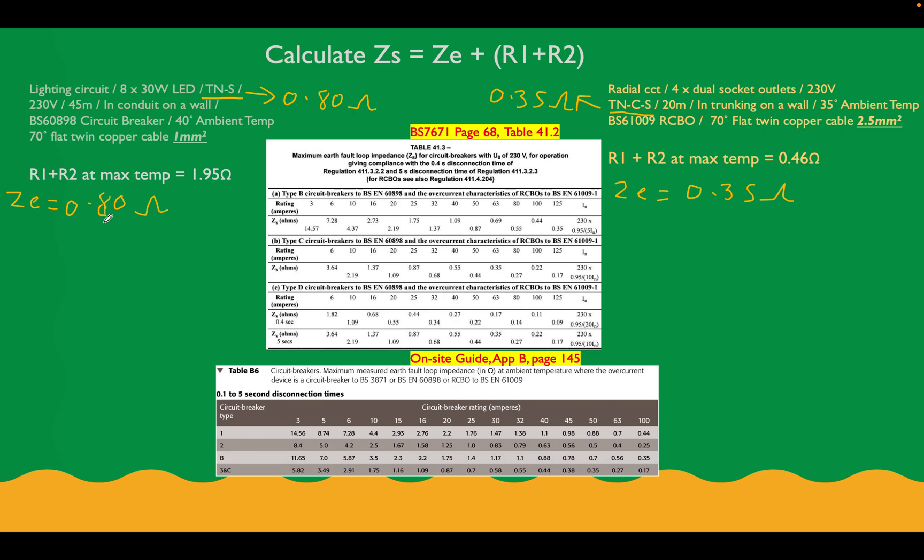So what can we do now? We can add this to our R1, R2 value to get our ZS. So let's put this in, 0.80 plus 1.95 equals 2.75 ohms. So that's our ZS value for this circuit.